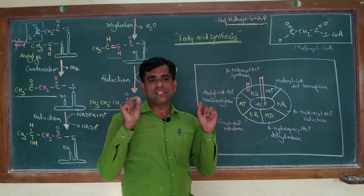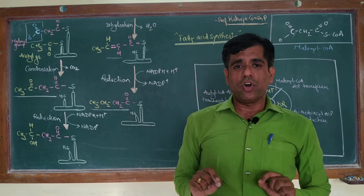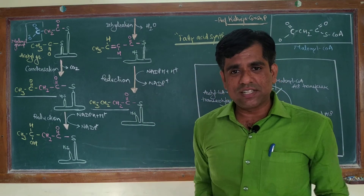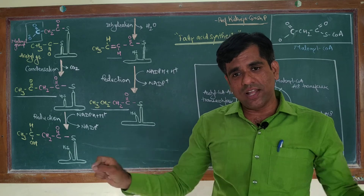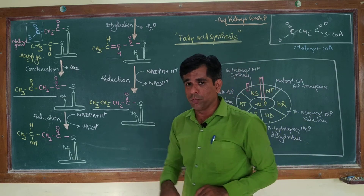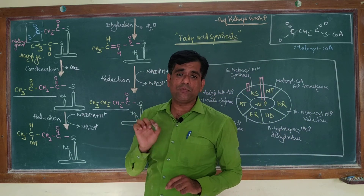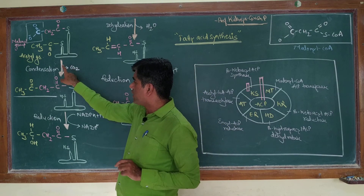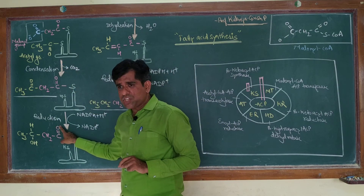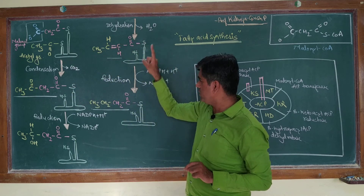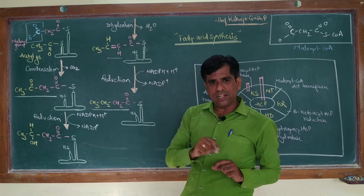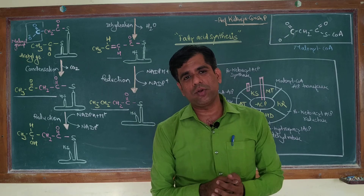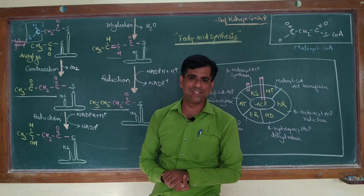Again, for a 16-carbon fatty acid, carbon atoms 15 and 16 have arrived from the acetyl group, whereas all others come via the malonyl group. The four repeating reactions in typical fatty acid synthesis are: condensation, reduction, dehydration, and again reduction. Stay tuned with me, Professor Girish Kukreja, for more in microbiology, biochemistry, and metabolism. Thank you.